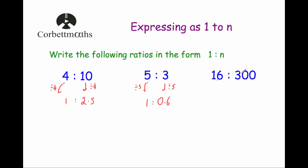Our last 1-to-n example: 16 to 300. We divide both numbers by 16 so the front number becomes 1. 16 divided by 16 is 1, and 300 divided by 16 is 18.75. So we have written all three ratios in the format 1 to n.